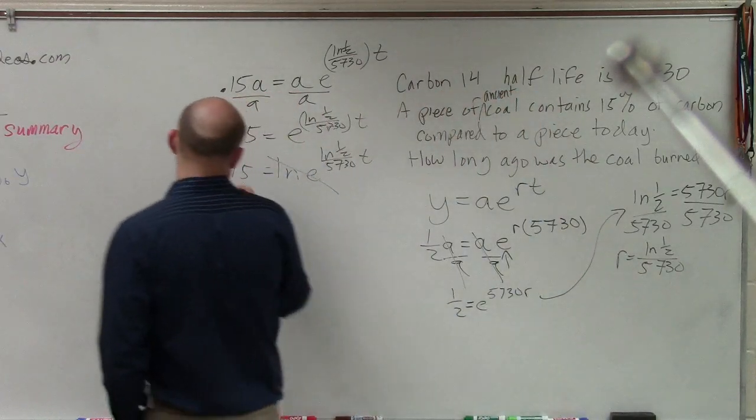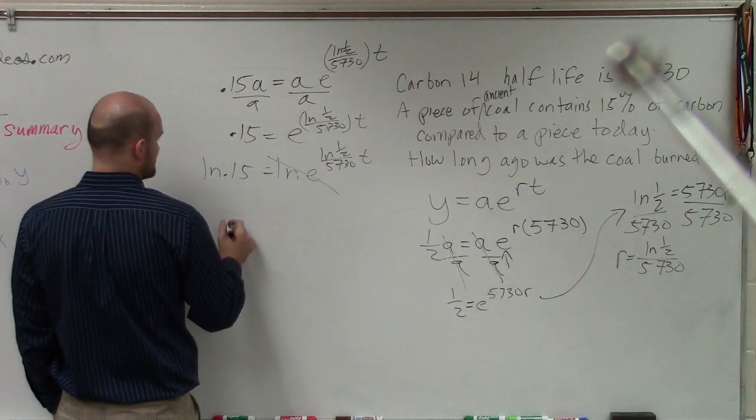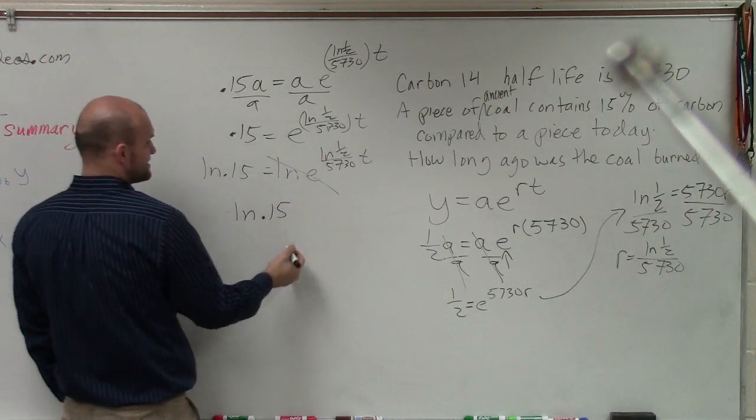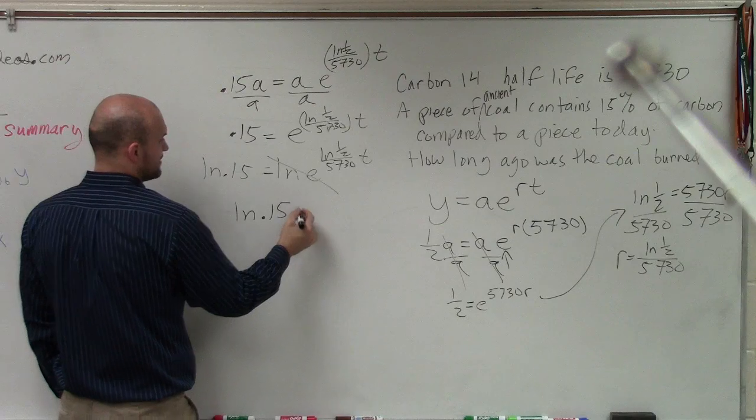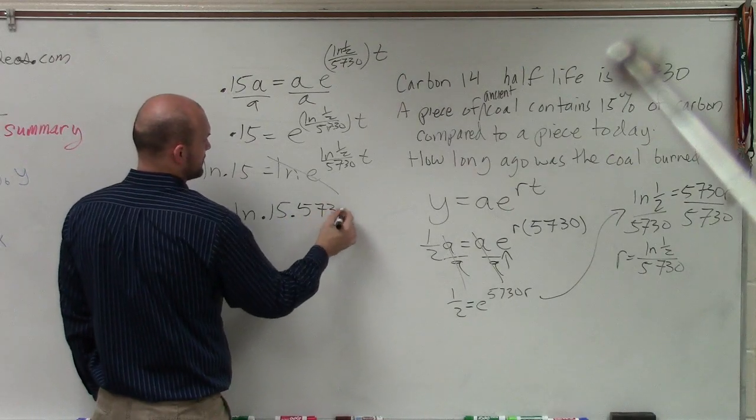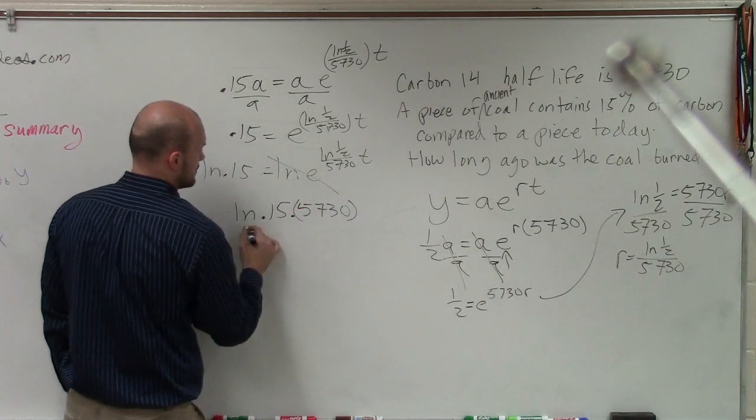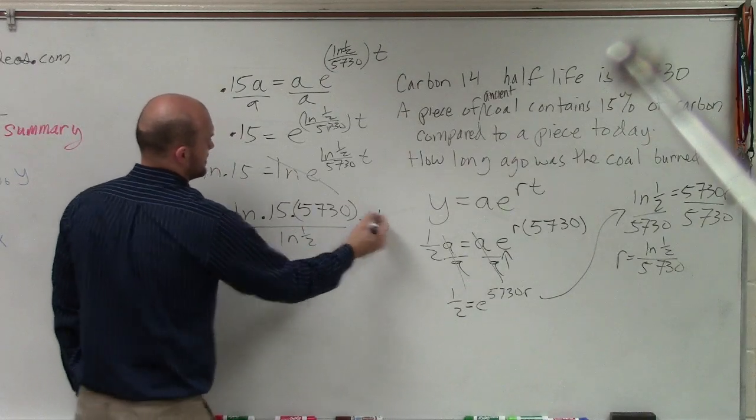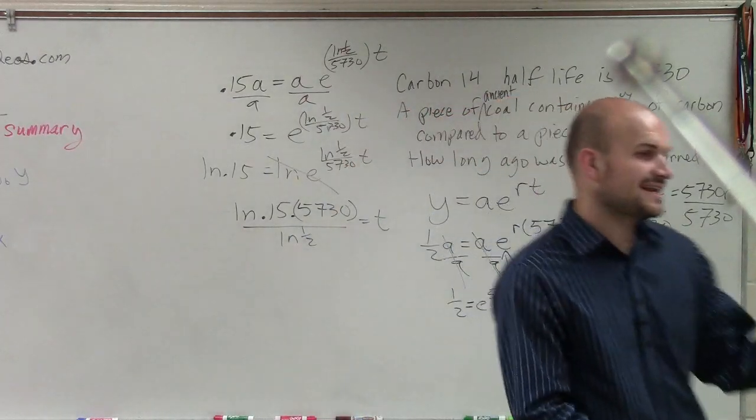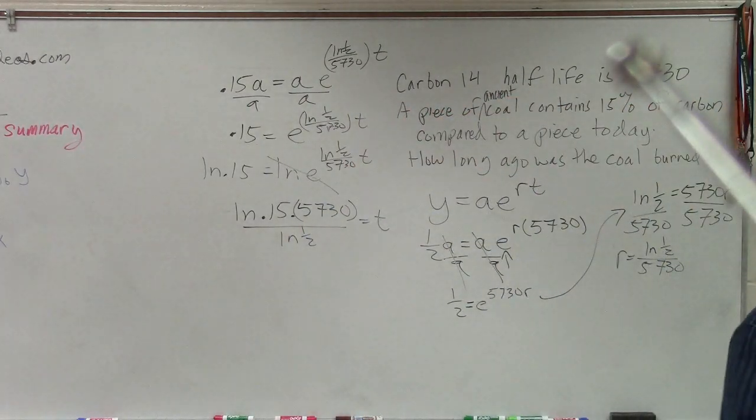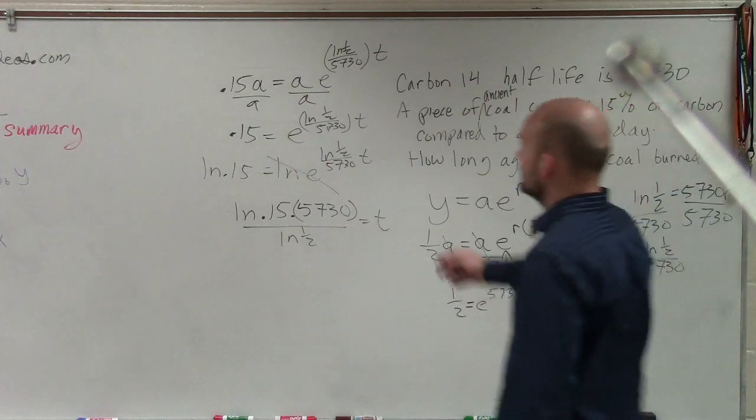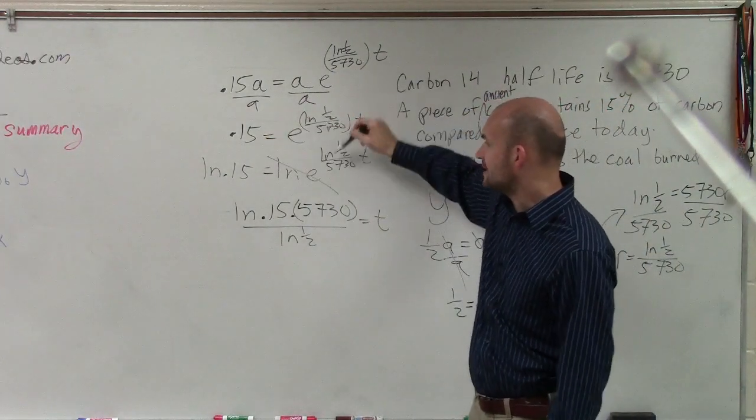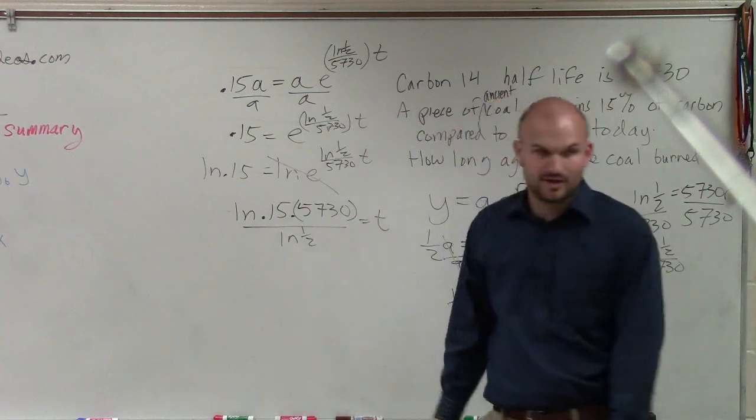So my final answer is going to be LN of 0.15. Then if I divide this, that's the same thing as multiplying it by 5,730 divided by LN of 1 half equals T. Dividing the same thing as multiplying by the reciprocal. So what I did here is instead of dividing this to get this T by itself, I just multiplied by the reciprocal. So that's how I got that final value.